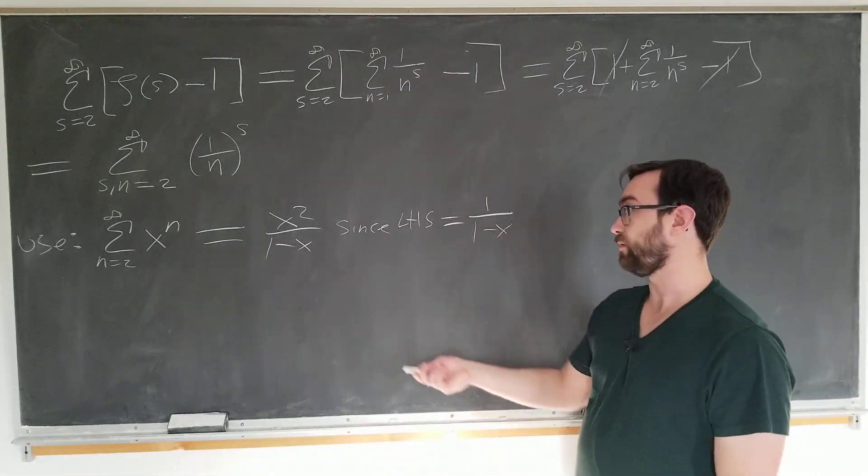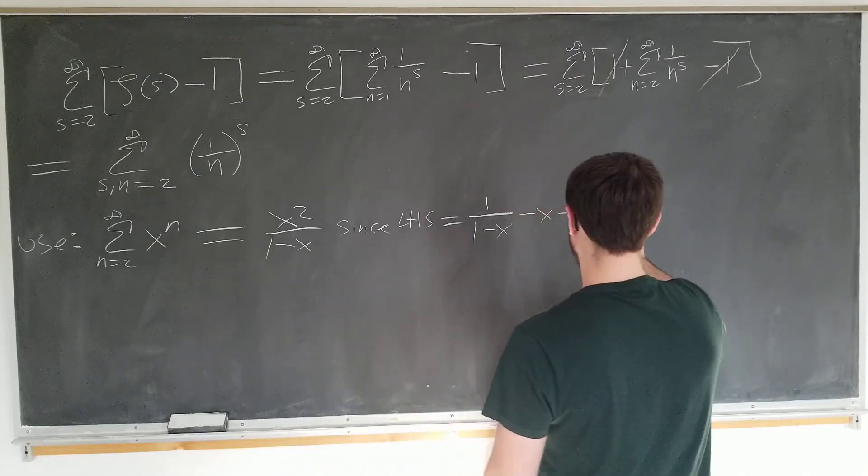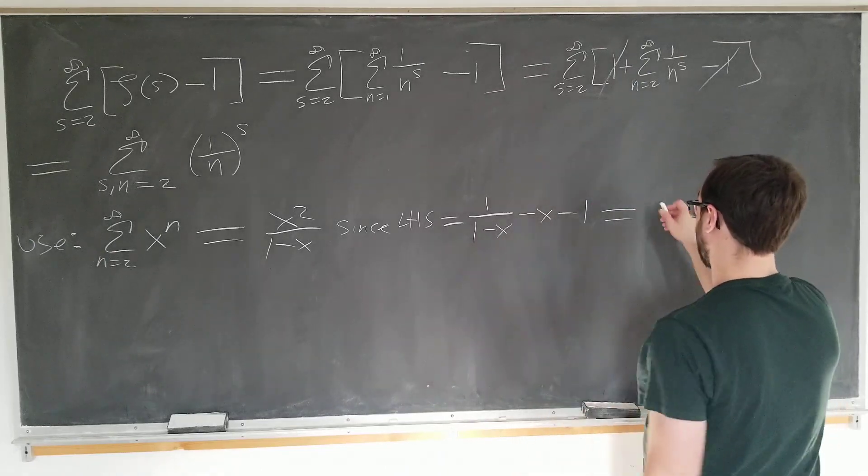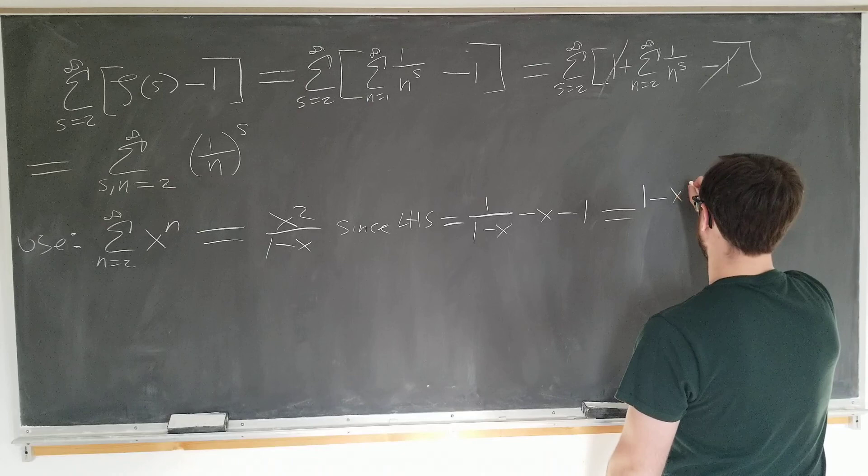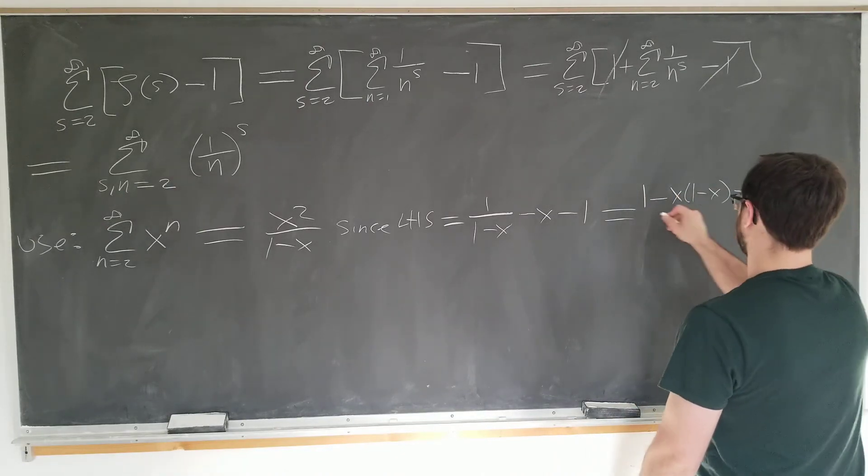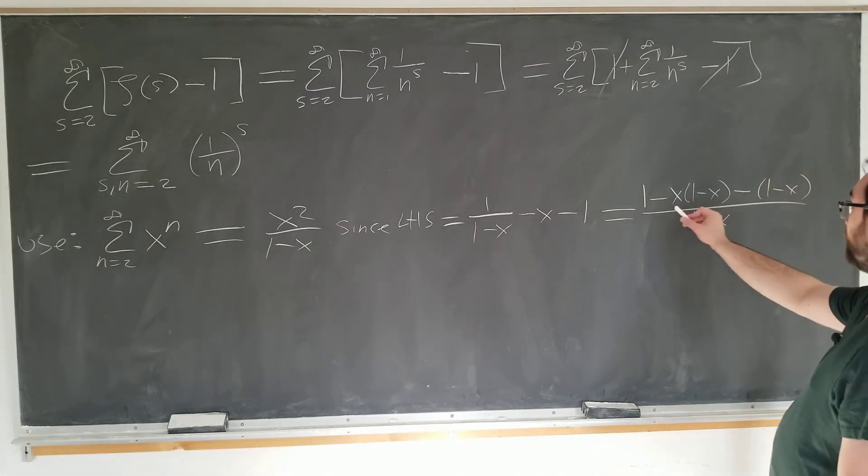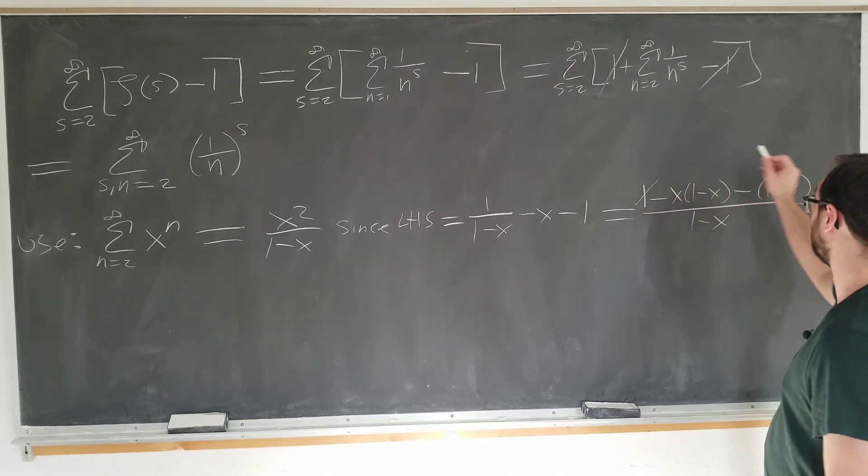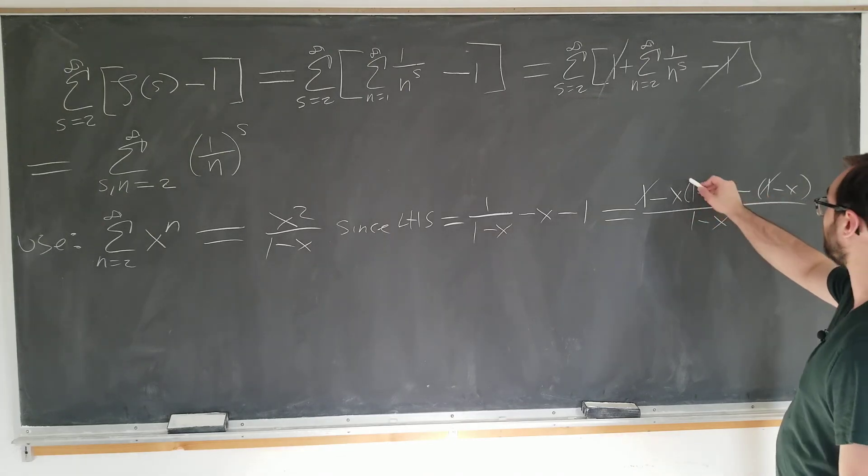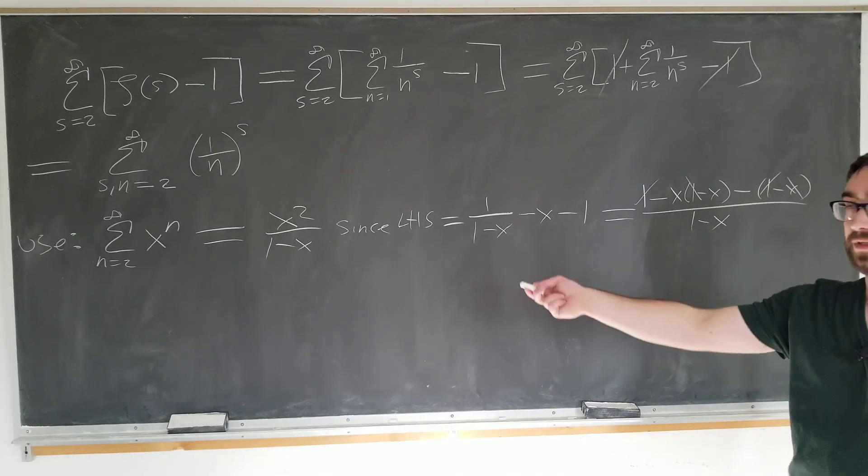And then we subtract off the terms that we don't have. So that's minus x and minus 1. So we use a common denominator of 1 minus x: 1 minus x minus 1 minus x over 1 minus x. And we cancel. This is going to cancel with this. Those ones cancel. We have the minus x term here going to cancel with the plus x term here, leaving us only with the result that we want.